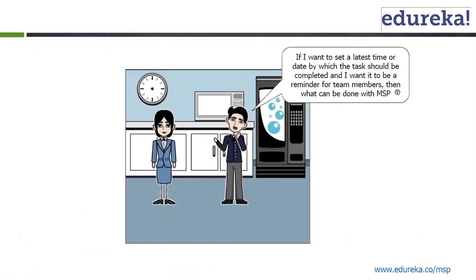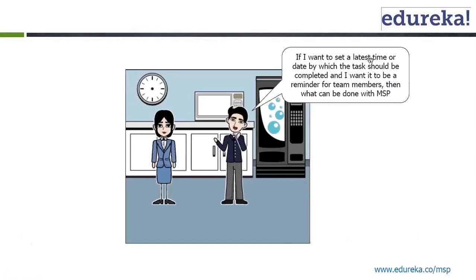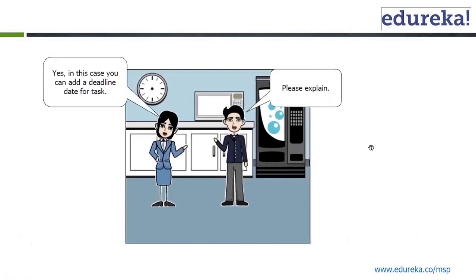If I want to set a latest time or date by which the task should be completed, and I want it to be a reminder for team members, then you can add a deadline date for a task. You can add a deadline to a task: on entering a deadline date, a deadline indicator is shown on the Gantt chart. Select the task, then on the task tab in the properties group, click on information.